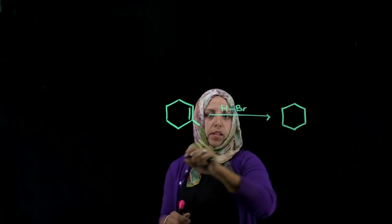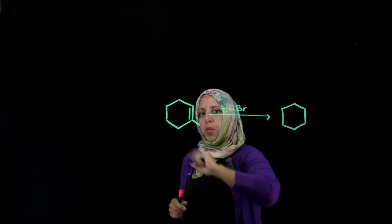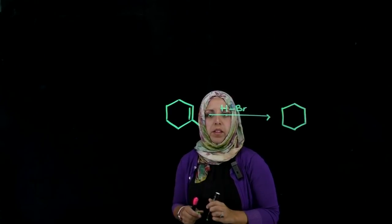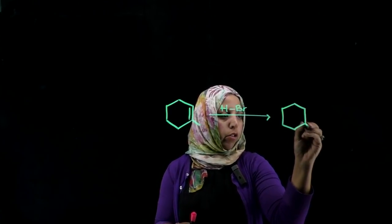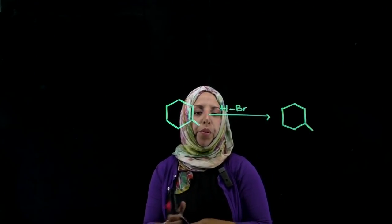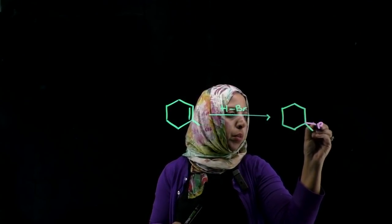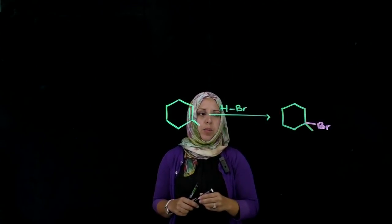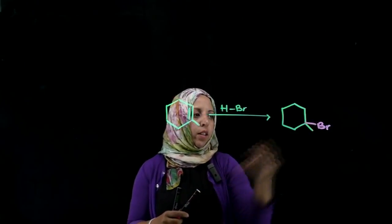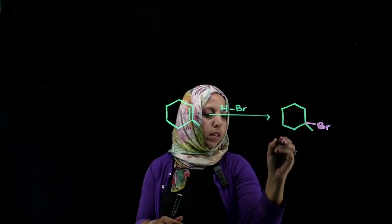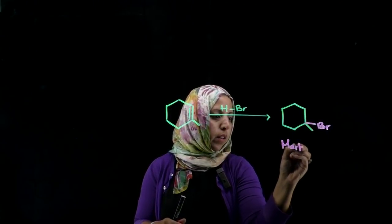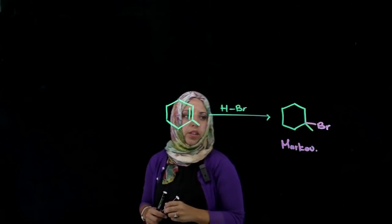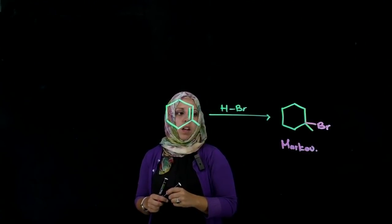If you're predicting the product, get rid of that carbon-carbon double bond. Hydrogen and bromine are adding across the carbon-carbon double bond. The bromine adds to the more substituted position of that carbon-carbon double bond, and we refer to this as a Markovnikov addition of bromine.